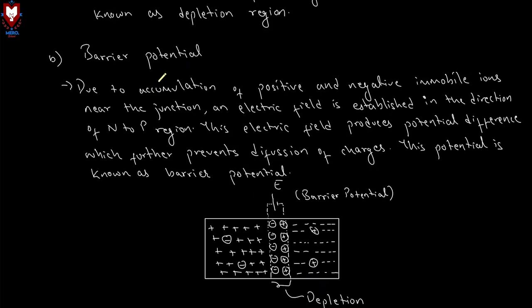Barrier potential: Due to accumulation of positive and negative immobile ions near the junction, an electric field is established in the direction from N-to-P region. This electric field produces a potential difference which further prevents diffusion of charges. This potential is known as barrier potential.